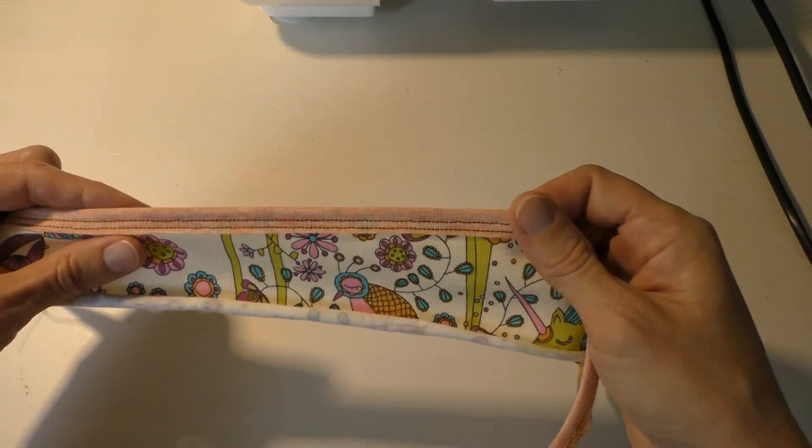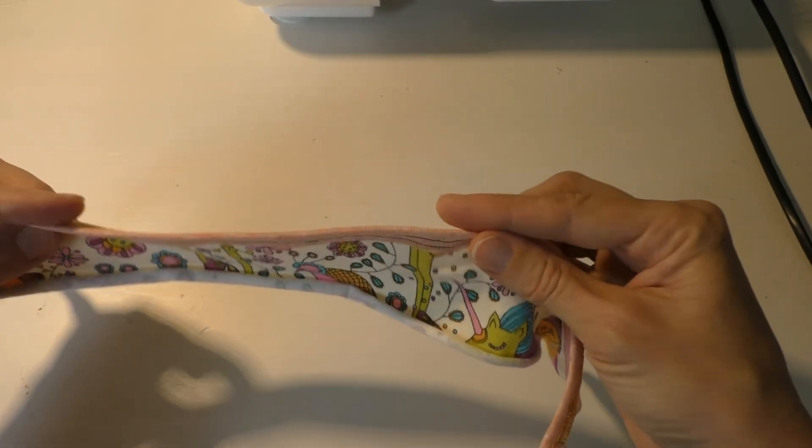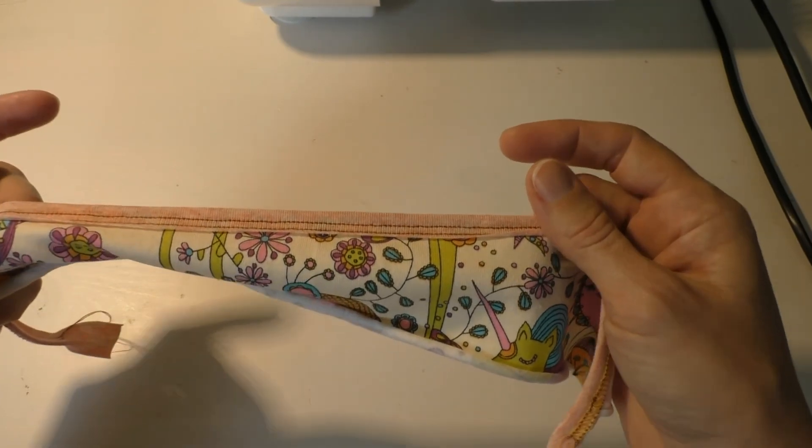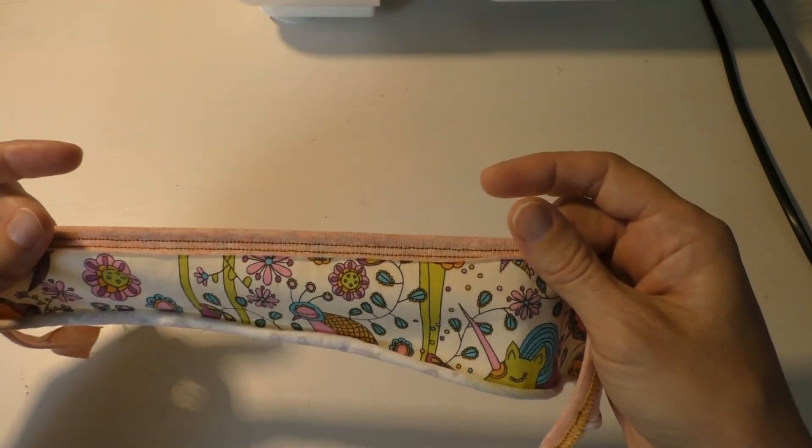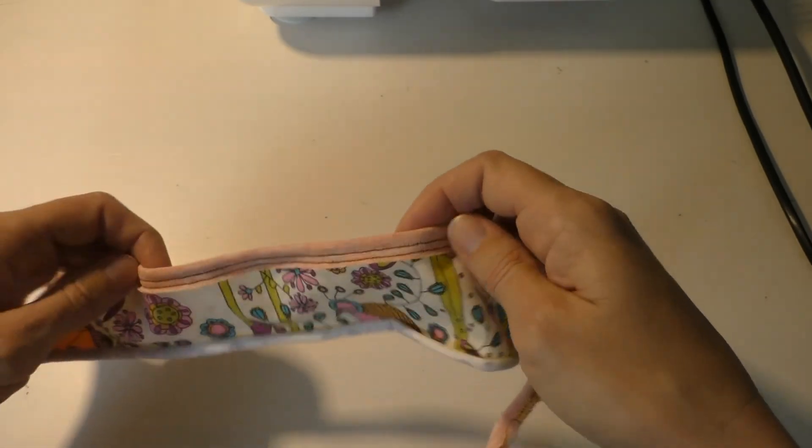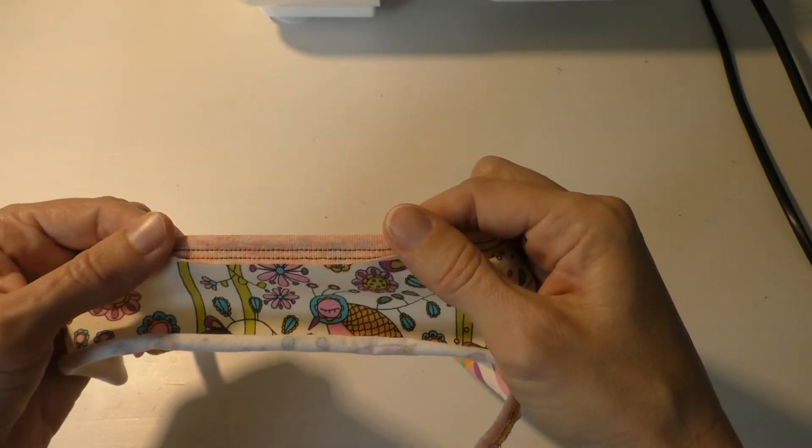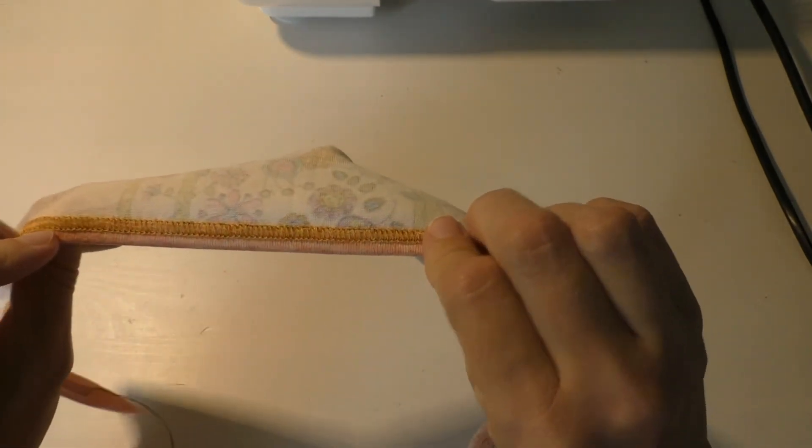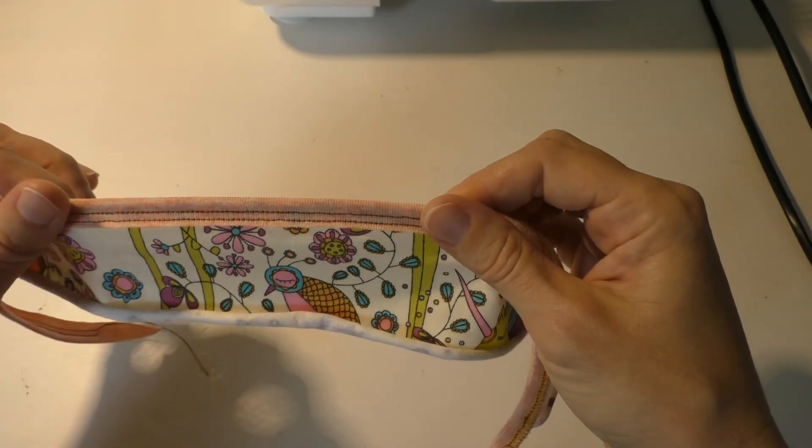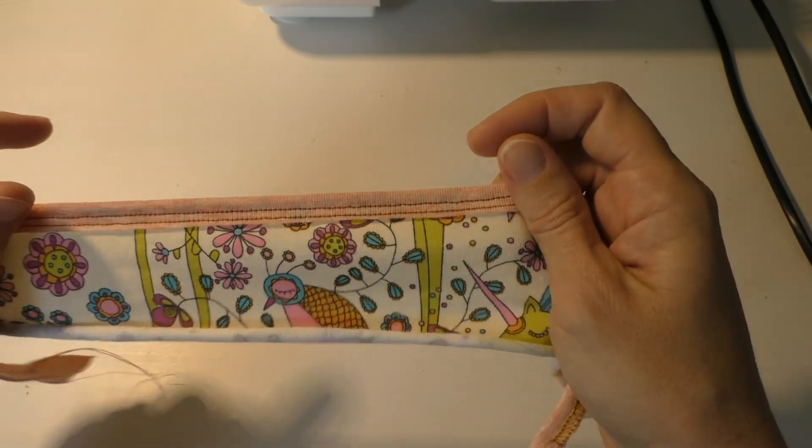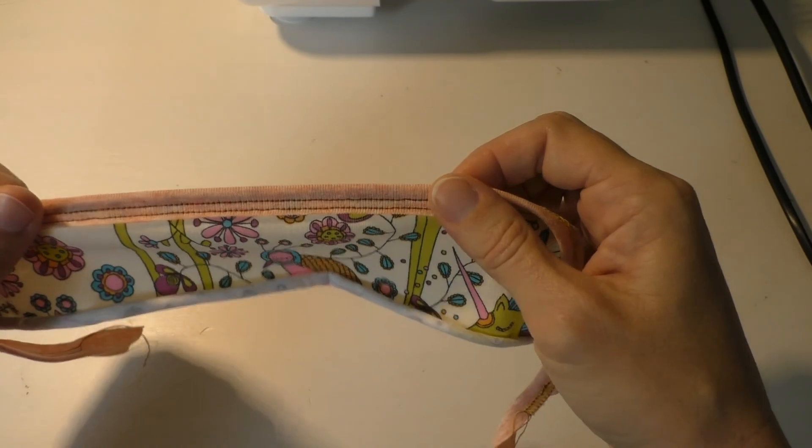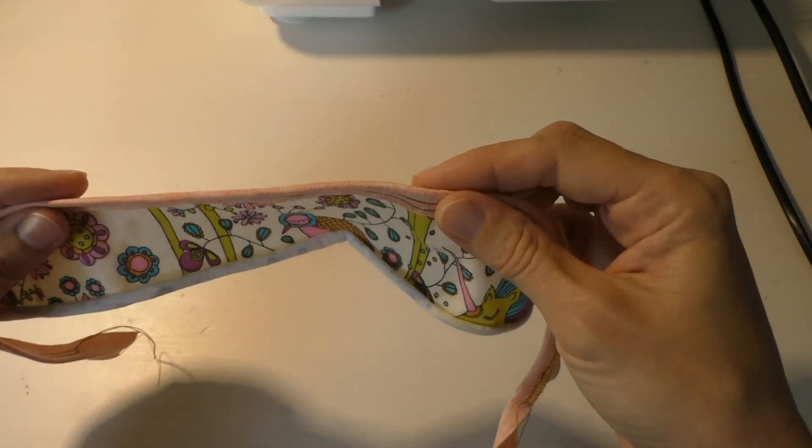So this concludes my video and my trick on how to turn a double fold into a raw edge binder and yet again, get a different look out of the same tool. So I hope you enjoyed this session with me at Rebecca Sewing Corner and look forward to reading your comments and look forward to seeing you again soon. Bye.